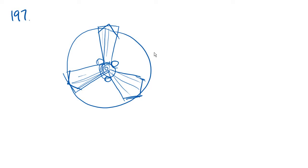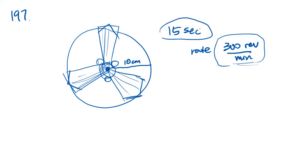Number 197 tells us that a point on the edge of a fan blade that is rotating in a plane is 10 centimeters from the center of the fan. So if this is the center of the fan, then the radius is 10 centimeters. What is the distance traveled in centimeters by this point in 15 seconds when the fan runs at a rate of 300 revolutions per minute?